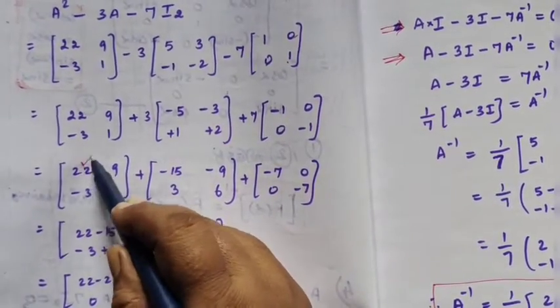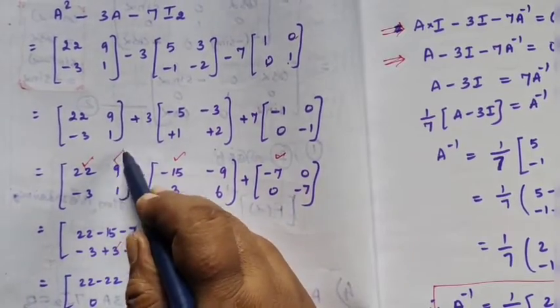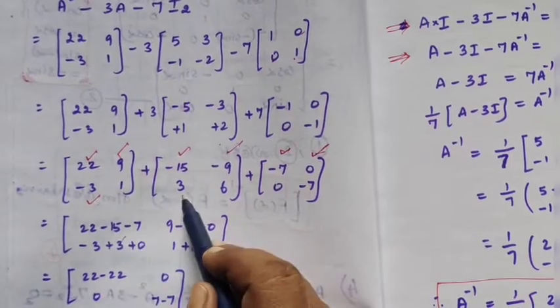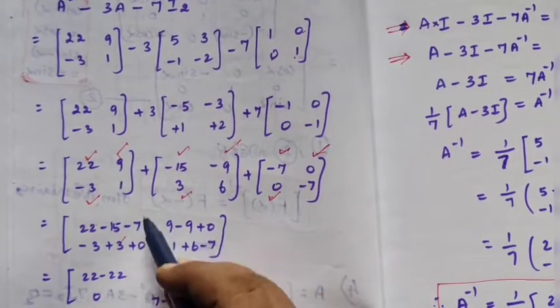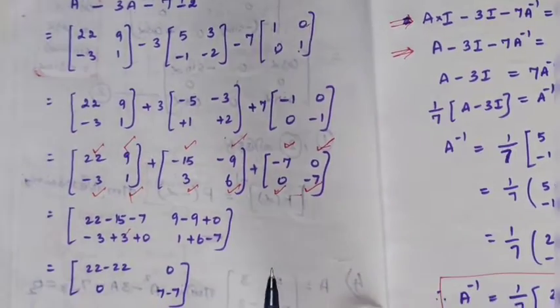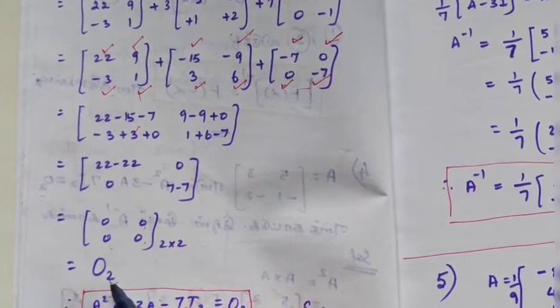Now collect all the elements. We get 9 minus 9 equals 0. So we get 0, 0, 0, 0. This is the 2 by 2 zero matrix.